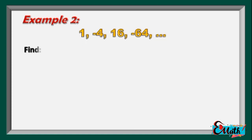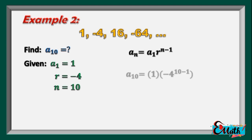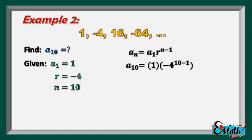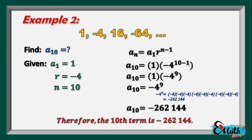Let us have the second example. Find the 10th term. Here are the given values: a sub 1 equals 1. The common ratio is negative 4 because negative 4 divided by 1 equals negative 4, and 16 divided by negative 4 equals negative 4. Since we are asked to find a sub 10, then n equals 10. Substituting the given to the formula, a sub 10 equals 1 times negative 4 to the power of 9, or a sub 10 equals negative 4 to the power of 9. Since negative 4 to the power of 9 equals negative 262,144, therefore the 10th term equals negative 262,144.